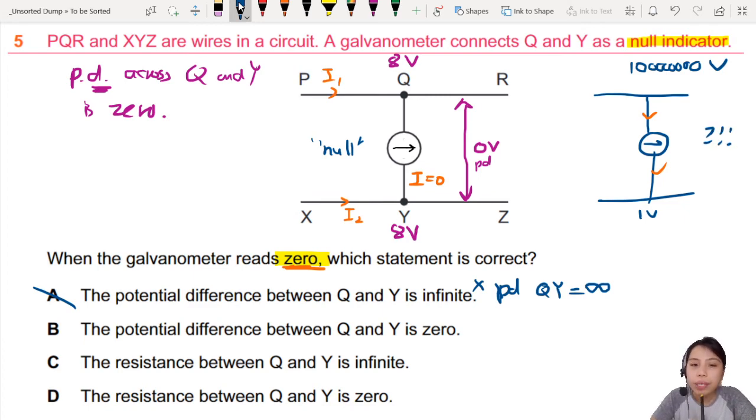B. The potential difference between Q and Y is zero. Yep. We talked about this. So here, no current flow means null. Null means zero volt potential difference between the two points. There can be any value. It can be eight volts. It could be 18 volts. It could be 218 volts. I don't care. Next. I think it's okay. Maybe it's the answer. But to be sure, let's also double check the rest.